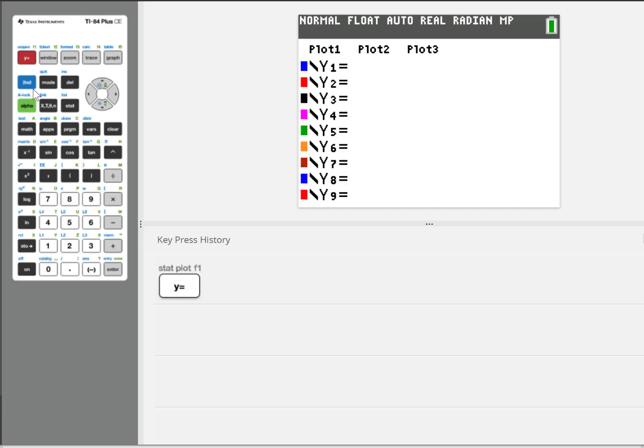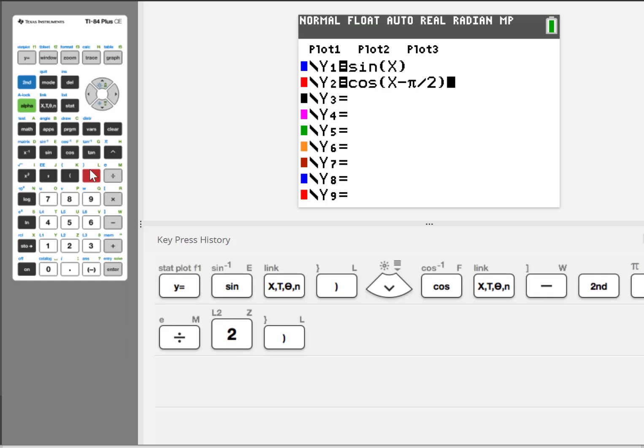So I'll go to the y equals area. The first equation is sine x. I am in radian mode, which is where I want to be for graphing trig functions. The second one is cosine, parentheses, x minus pi over 2. Of course, I'll have the blue and the red to help me see what's going on.